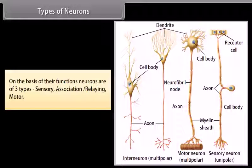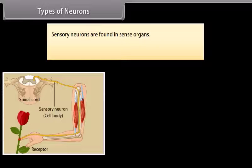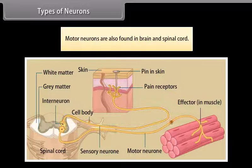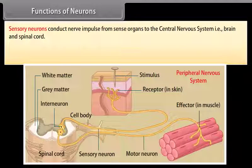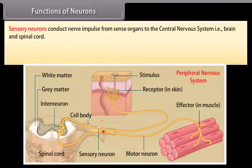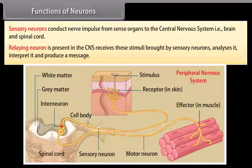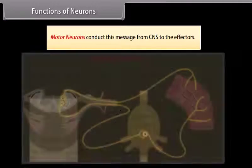On the basis of their functions, neurons are of three types: sensory, association/relay, and motor. Sensory neurons are found in sense organs. Association/relay neurons are found in the brain and spinal cord. Motor neurons are also found in the brain and spinal cord. Sensory neurons conduct nerve impulses from sense organs to the CNS. Relay neurons in the CNS receive stimuli from sensory neurons, analyze and interpret them, and produce a message. Motor neurons conduct this message from the CNS to the effectors.